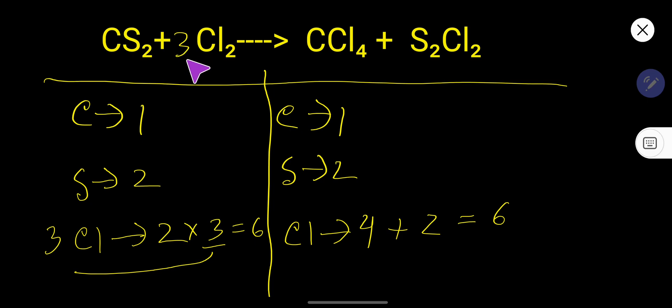This three is called coefficient, and this three is subscript. Let us multiply coefficient times subscript, so six. Already we have six chlorine. Now you see that carbon one, one, sulfur two, two, chlorine six, six.